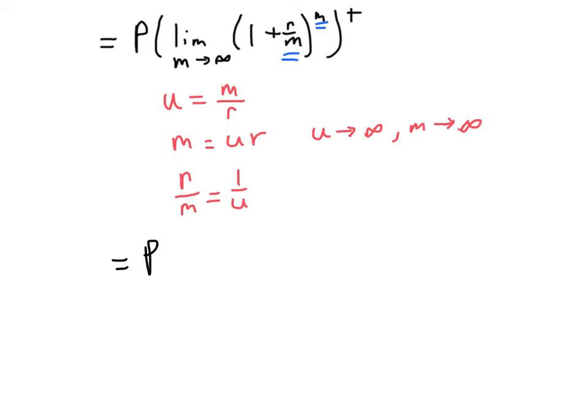So we still have our P, and then we're going to take the limit. Instead of m going to infinity, u will go to infinity, so that doesn't change anything. 1 is still 1, but instead of r over m, I'm going to put 1 over u. And instead of m, I'm going to put ur. Raise that to the t.